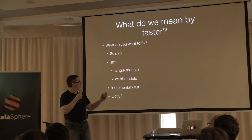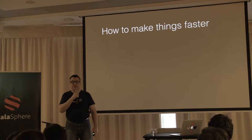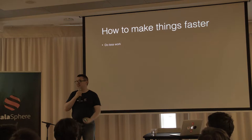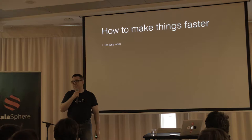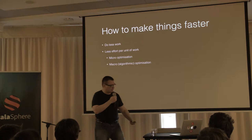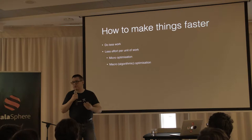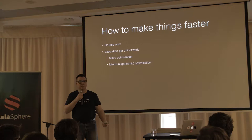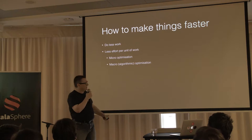Let's quickly cover how you make things faster. Do less work — sounds stupid, but it's true. Dividing your project, if you've got a large single codebase, into multiple modules so you're only compiling one part of it will make things faster for your day-to-day work. Clean out your project, think about your build organization. Less effort per unit of work — per module or per class file — can be micro-optimizations like making a single method faster, or macro-level optimization like rethinking how you do things, such as the work on implicits currently PR'd in the Scala compiler.